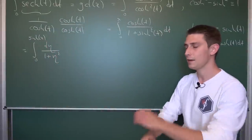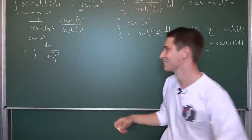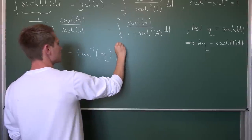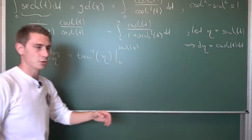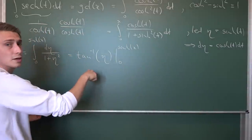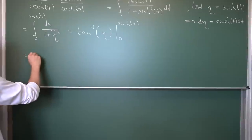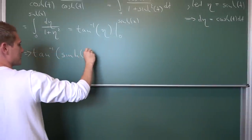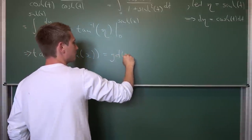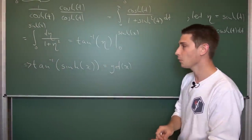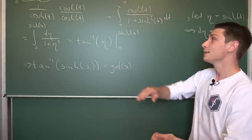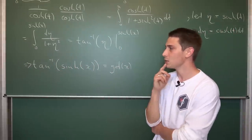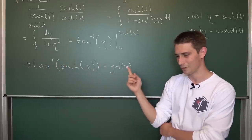This integral is a standard one — the antiderivative of 1/(1 + eta²) is the inverse tangent of eta. Evaluating from 0 to sinh(x): arctan(0) is just 0, so the lower bound vanishes. Plugging in sinh(x) leaves us with the Gudermannian of x being nothing but the inverse tangent of the hyperbolic sine of x: gd(x) = arctan(sinh(x)). Using trigonometric and hyperbolic identities, you can arrive at 10 or 12 different equivalent expressions for the Gudermannian.